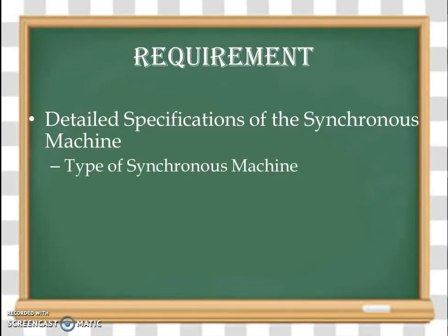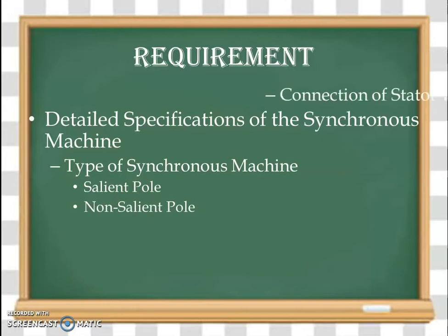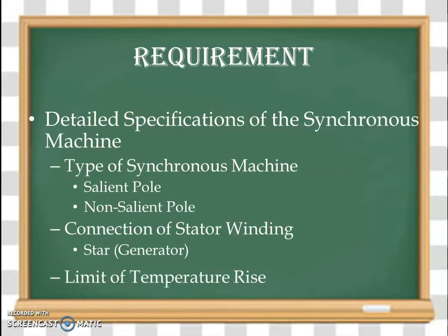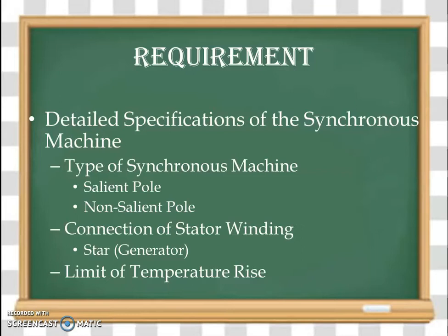Then the type of synchronous machine — whether it is a salient pole type or non-salient pole type. Then the connection of the stator winding; in the case of a generator, we use star connection. Then the limit of temperature rise, based on whatever class of insulation we have used, and accordingly we have the limit of temperature rise.